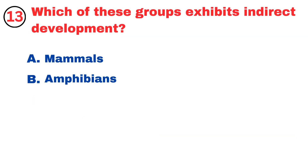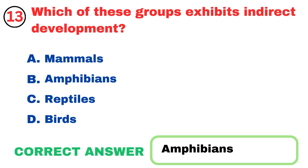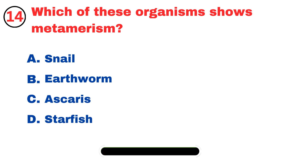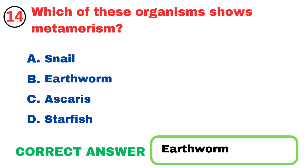Which of these groups exhibits indirect development? Amphibians. Which of these organisms shows metamerism? Earthworm.